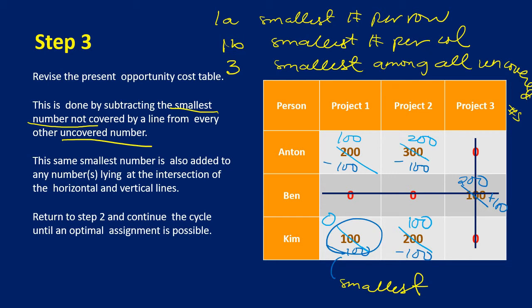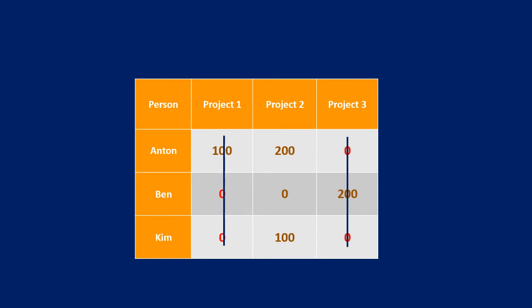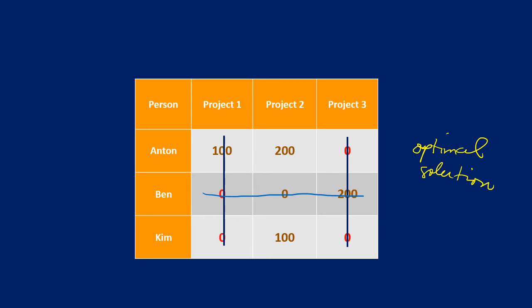Step 2 again: cover all the zeros in the revised table. Covering all zeros, we now have three lines. That is equal to the number of rows, which means we already have an optimal solution.